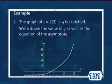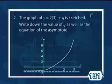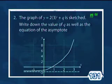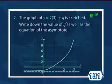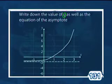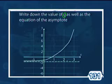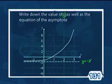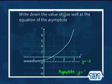A similar example number 2, still on page 131: the graph of Y equals 2 times 3 to the X plus Q is sketched. Write down the value of Q as well as the equation of the asymptote. I'm going to do the asymptote first because it's easier. From the graph, can you see that the dotted barrier line is along the line where Y equals minus 2? So my asymptote has the equation Y equals minus 2.